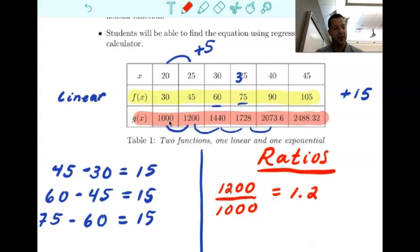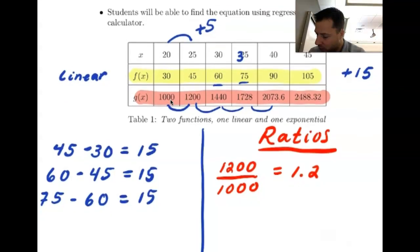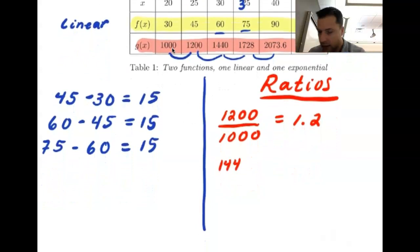So hopefully if we continue taking these ratios, let's look at the next set of numbers. Let's look at 1,440 and divide it by 1,200. You get 1.2.